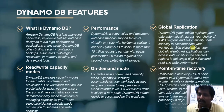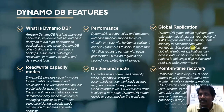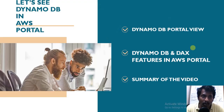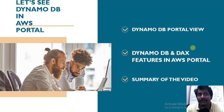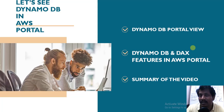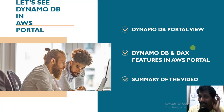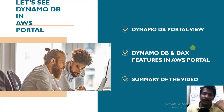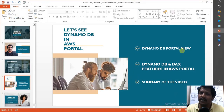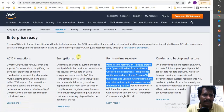So now we understand what DynamoDB is — its performance, global replication, read/write capacity modes, on-demand mode, and point-in-time recovery. What we're going to do next is quickly explore the AWS portal. We'll look at the portal overview of DynamoDB, talk about how to configure the DynamoDB Accelerator for additional performance — up to 10x caching — and look at other features in the AWS portal.